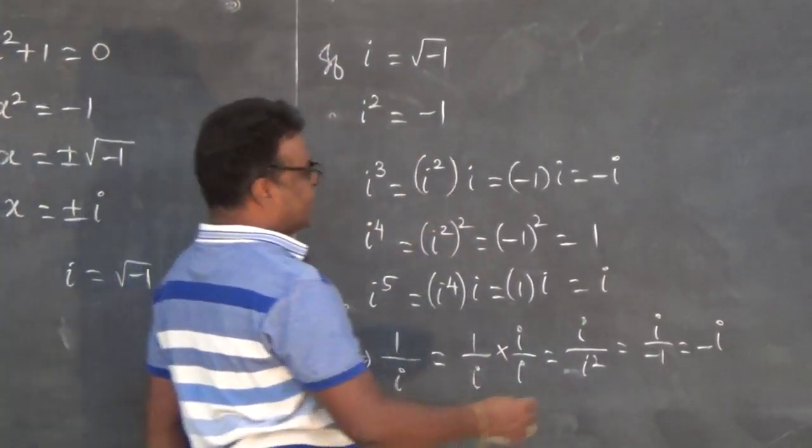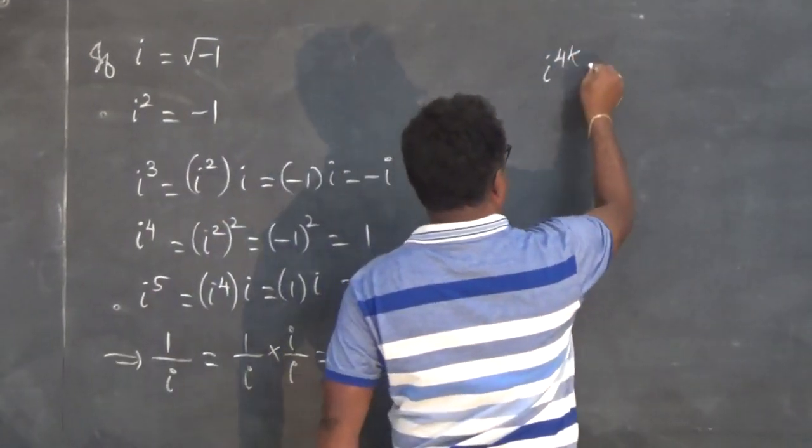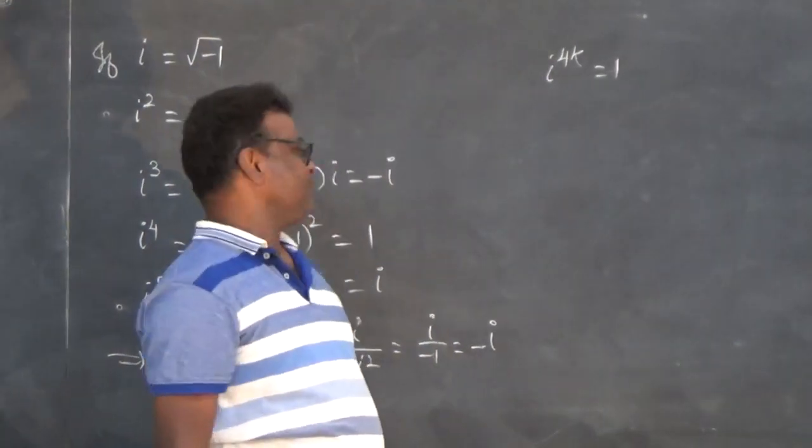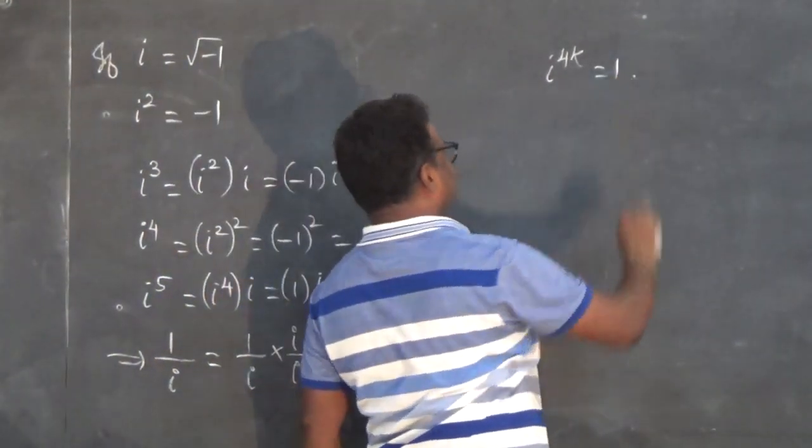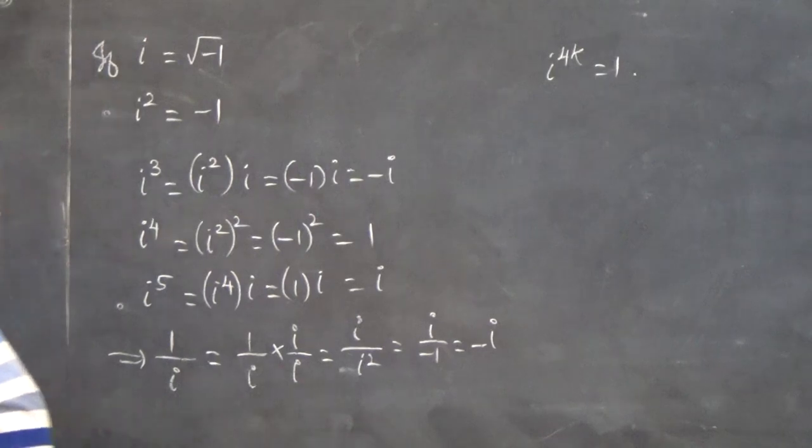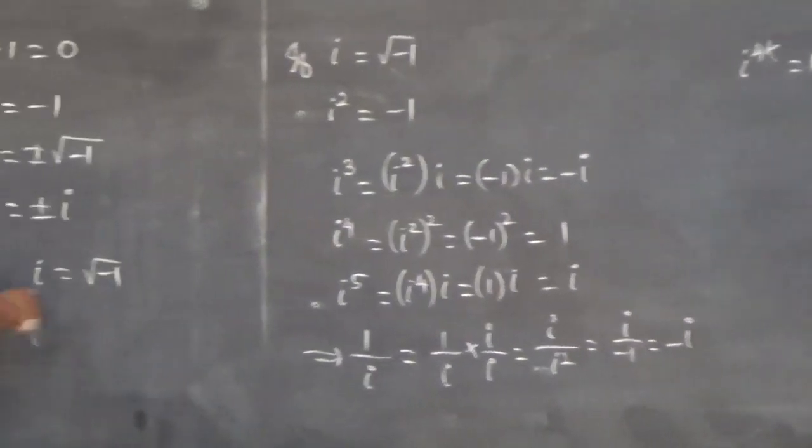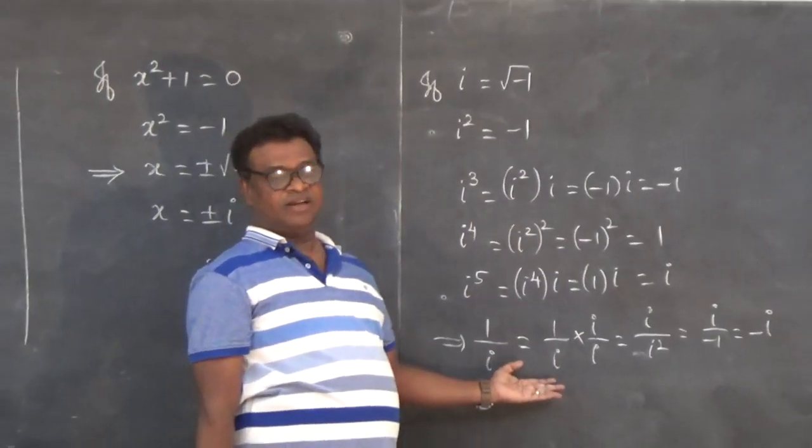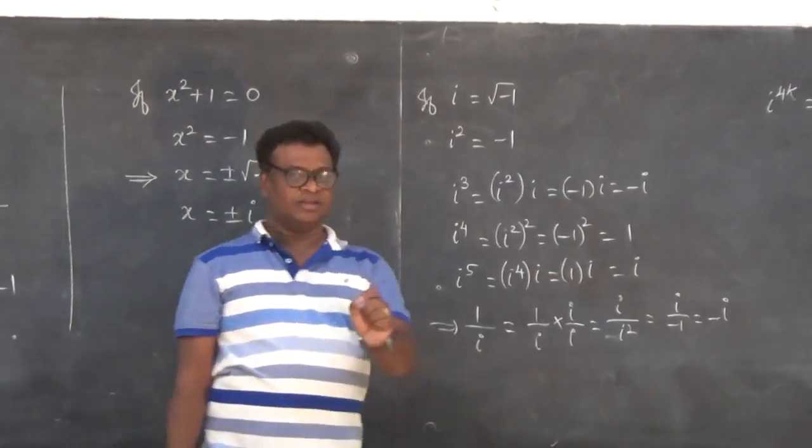So I can conclude i^(4k) is always 1 for any value of k. We started studying a new number i, whose value is √(-1), and it is possible for us to develop up to this. Thank you.